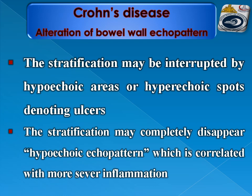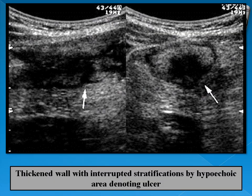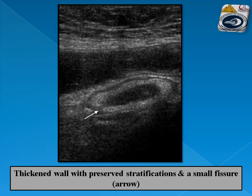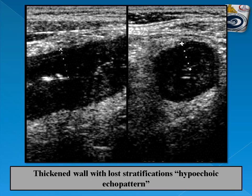The stratification may be interrupted by hypoechoic areas or spots denoting ulcers, or the stratification may completely disappear — called hypoechoic echopattern — which is correlated with more severe inflammation. Examples show interrupted stratification by hypoechoic fissures or ulcers, and a small hypoechoic fissure crossing the wall and interrupting its stratification. Complete loss of stratification is called the hypoechoic pattern of the bowel wall.